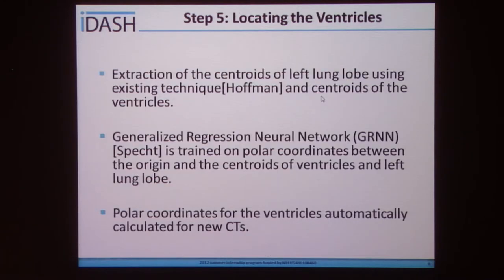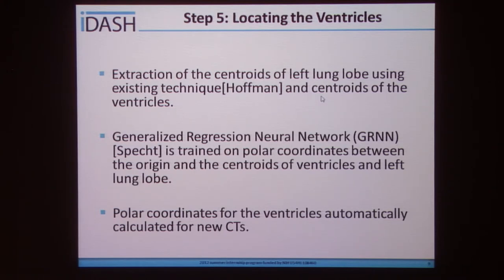To allow complete automatic extraction, information is needed for the approximate location of the ventricles. This was done by extraction of the centroids of the left lung lobe using existing techniques by Hoffman, and the centroids of the ventricles from the dataset. The generalized progression neural network was then trained on the polar coordinates between the origin and the centroids of the ventricles and the left lung lobe. Polar coordinates for the ventricles were then automatically calculated for new CTs.